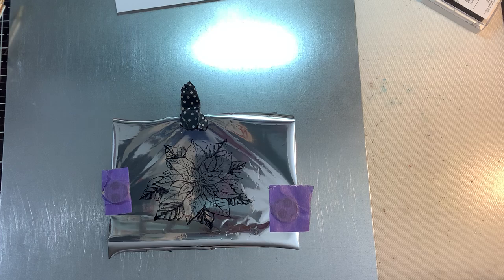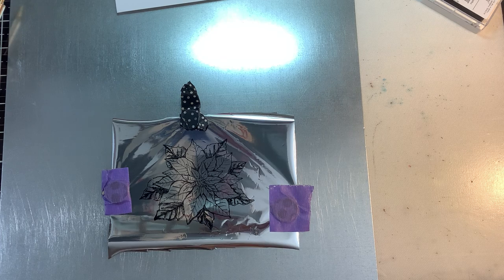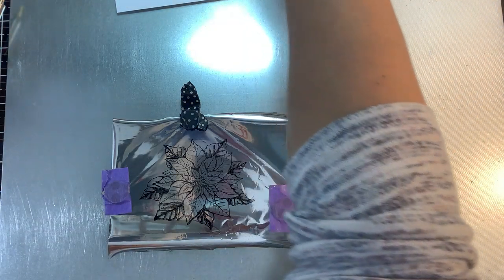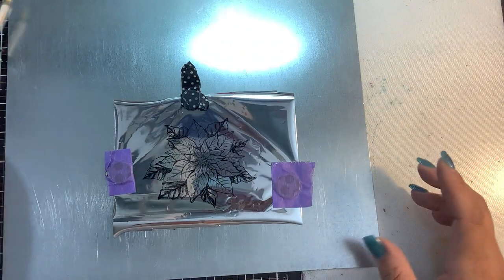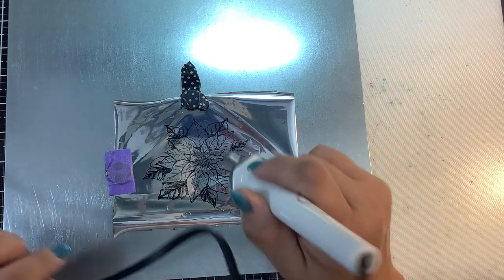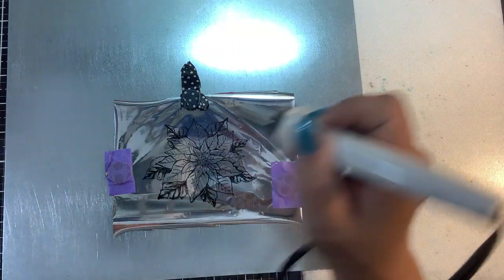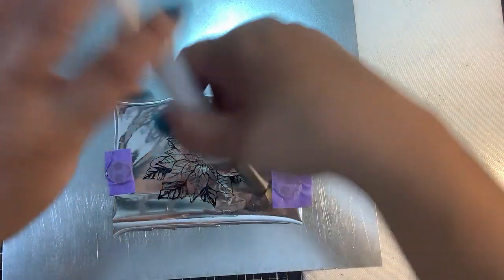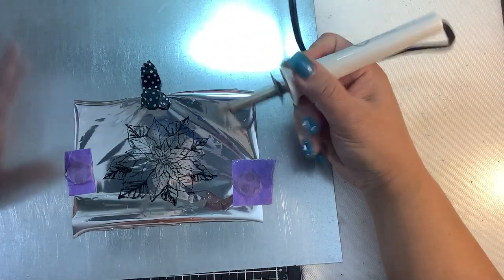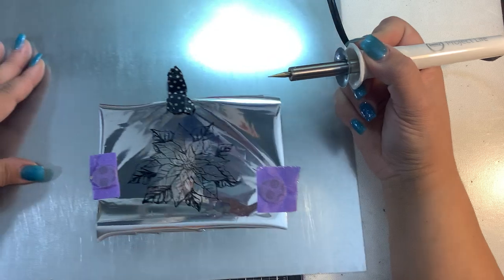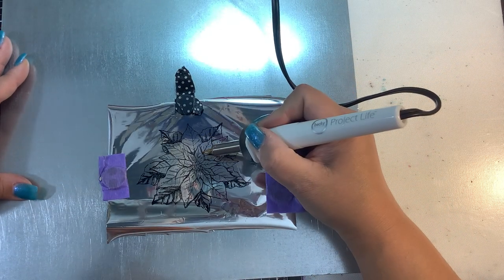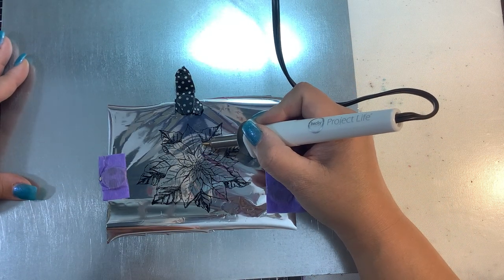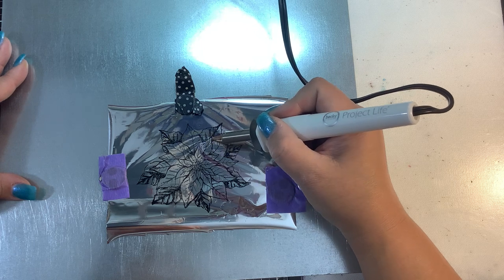Now there's a couple different size tips you can get on the foil quill. There's fine, there's regular, there's bold, there's calligraphy. So this, I would assume, would be considered more of a fine tip. This is a plug in one, the foil quill, you would plug into some kind of a battery box. It's powered by USB. So at this point, all you're going to do is very carefully trace your image.